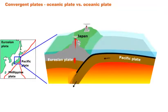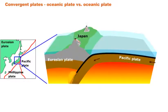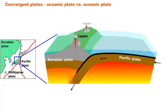First up, when two plates are moving towards each other, we say they are converging. There are three types of converging plate boundaries: oceanic versus oceanic plates, oceanic versus continental plates, and continental versus continental plates.